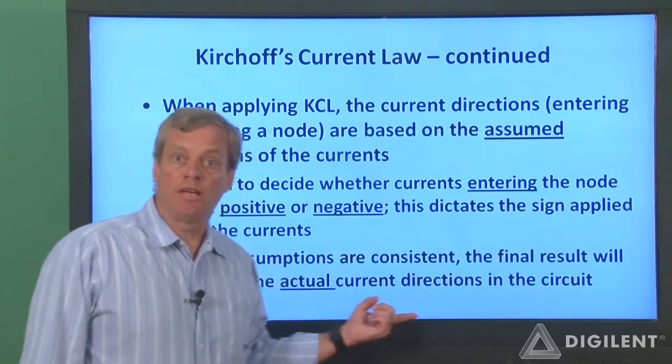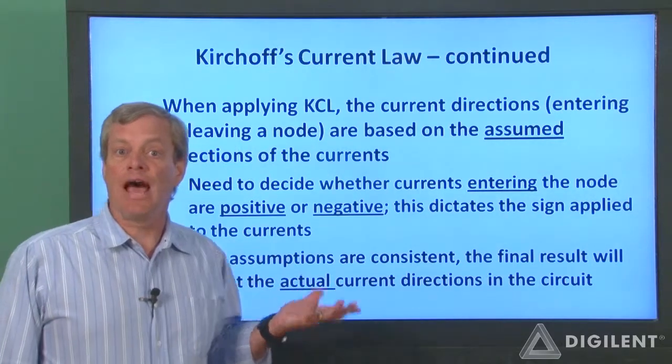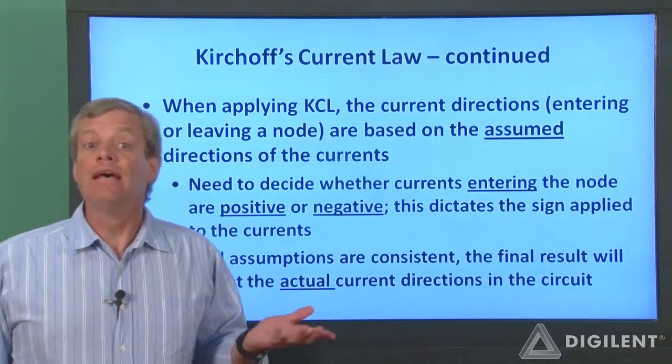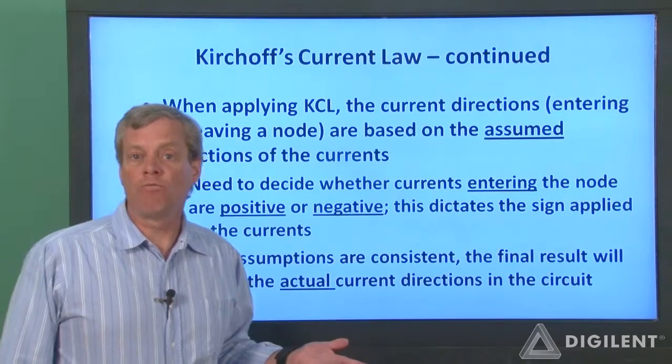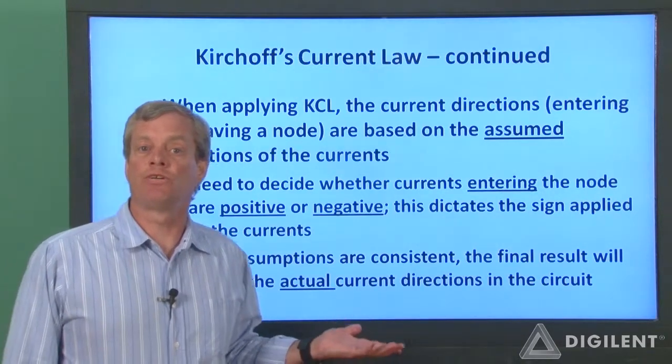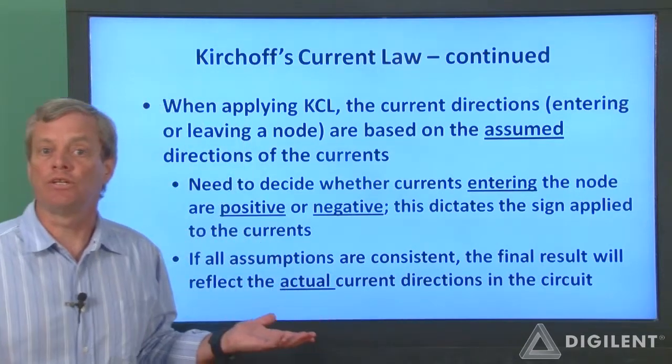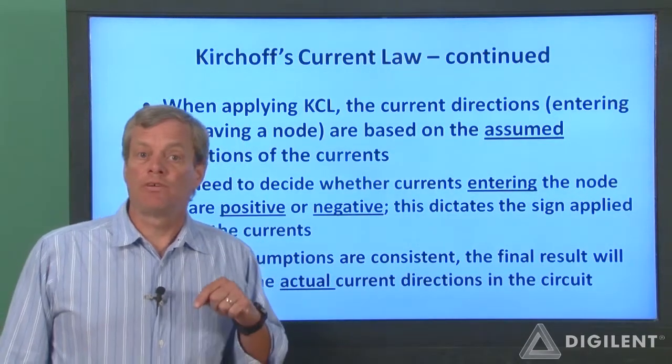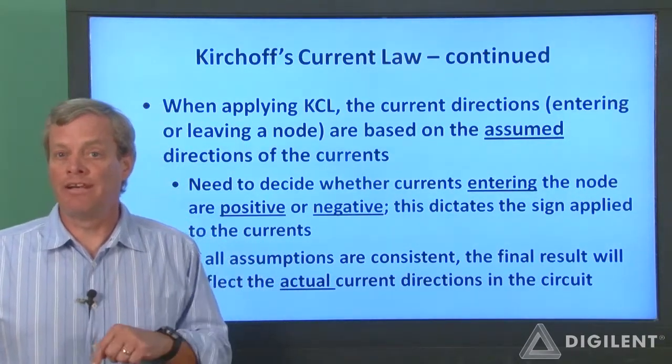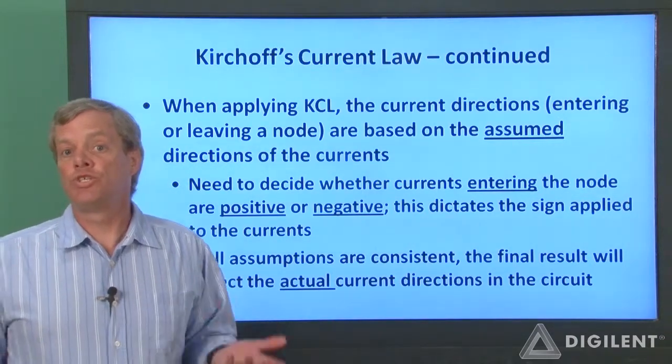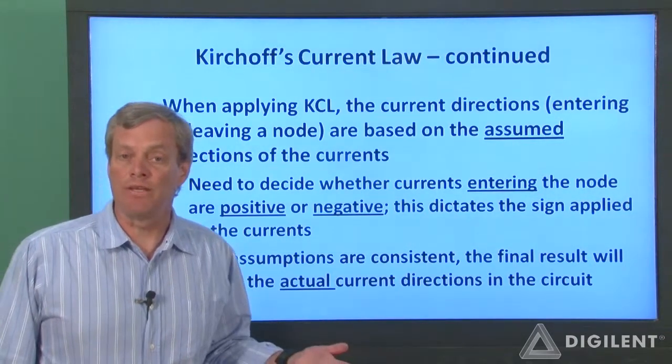If you're consistent about how you define your current directions and how you treat the signs on the current, KCL will make sure that everything works out and the signs on your resulting currents will correctly identify the actual current direction. Don't waste your time trying to decide which directions the currents at a node actually are in when you define them. Just choose a reference direction and stick with it.